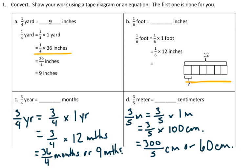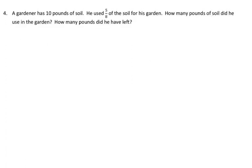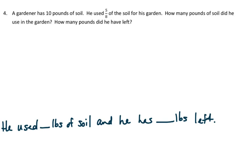We're going to be doing homework problem number 4 as well, and it reads, a gardener has 10 pounds of soil, he used 5 eighths of the soil for his garden. How many pounds of soil did he use in the garden, and how many pounds did he have left? Let's go ahead and start with the target sentence. He used blank pounds of soil, and he has blank pounds left.